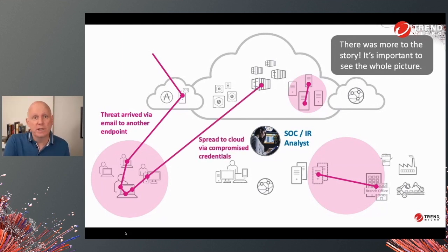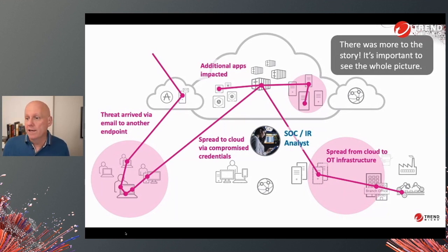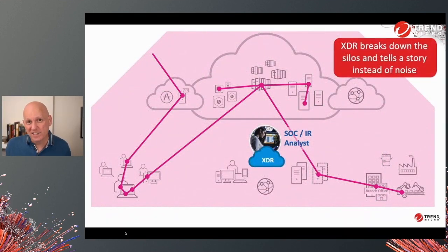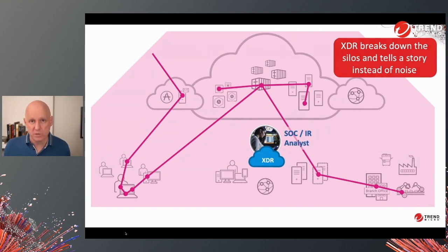In this story, a threat came in through email and spread from endpoints to the cloud environment into containers because of compromised credentials. There were additional apps impacted, and then it spread into another part of the environment over the network. This is very hard to piece together if all you're getting is detection alerts in the SIEM. So what you want is this overall activity telemetry gathered up by an XDR system, giving you the opportunity for both automated detections as well as hunting and other manual approaches to detect threats that might otherwise be missed.